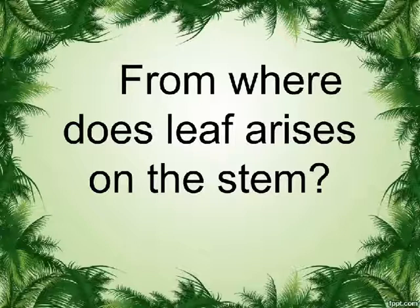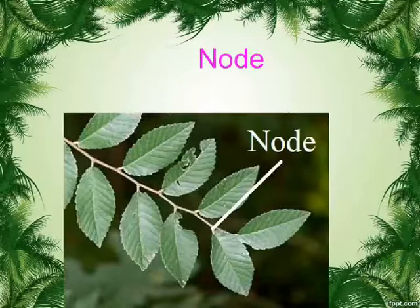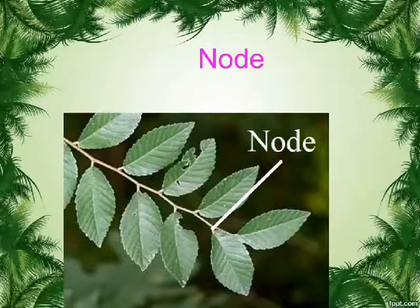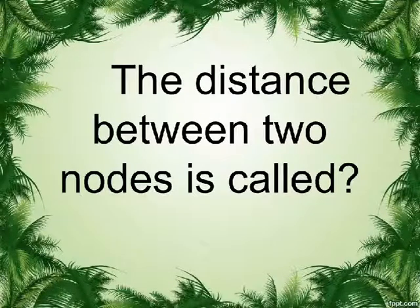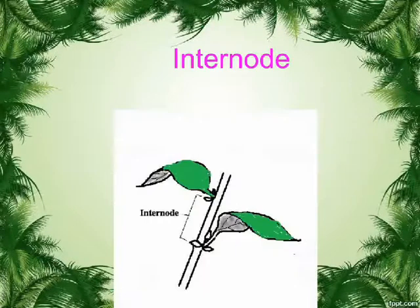From where does the leaf arise on the stem? Node. The distance between two nodes is called the internode.